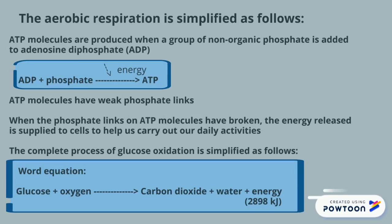ATP molecules have weak phosphate links. When the phosphate links on ATP molecules are broken, the energy released is supplied to cells to help carry out daily activities. The complete process of glucose oxidation is simplified as follows: glucose plus oxygen breaks down into carbon dioxide, water, and energy.